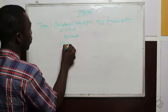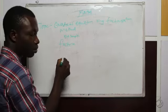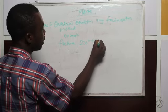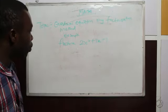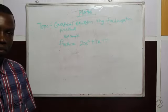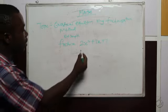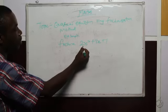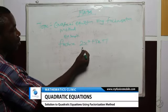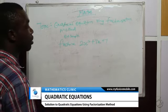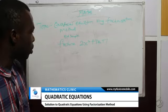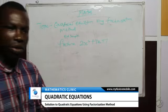Factorize: 2x² + 3x + 1. This is a quadratic equation because the power of x is 2, the coefficient of x² is 2, and the constant term is +1. So this is the quadratic equation. How do we factorize this quadratic equation?